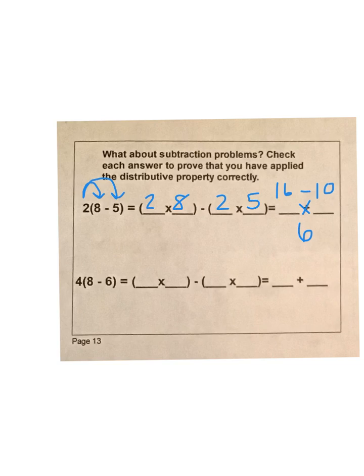Then for the second, we have 4 times 8, and 4 times 6. We see it's a subtraction sign. So we have 4 times 8, minus 4 times 6. And we have 32 minus 24, which gives us 8.